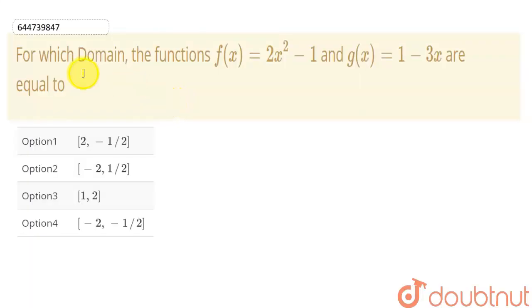So students, in this question we have to tell for which domain the function f(x), which is given as 2x squared minus 1, and the other function g(x), which is given as 1 minus 3x, are equal.